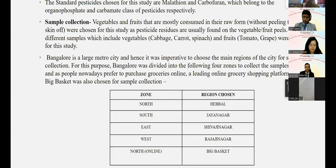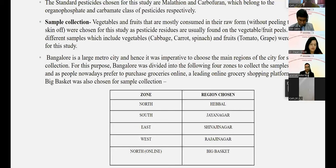Sample collection focused on vegetables and fruits mostly consumed in raw form without peeling. Five samples were chosen: cabbage, carrots, spinach, tomato, and grapes. Bangalore was divided into four major zones for sample collection: North zone (Hebbal), South zone (Jayanagar), East zone (Shivajinagar), and West zone (Rajajinagar). As people increasingly purchase groceries online, samples were also collected via the online grocery platform Big Basket.